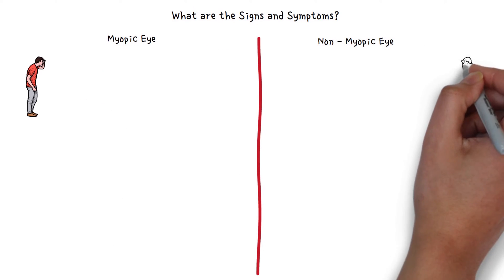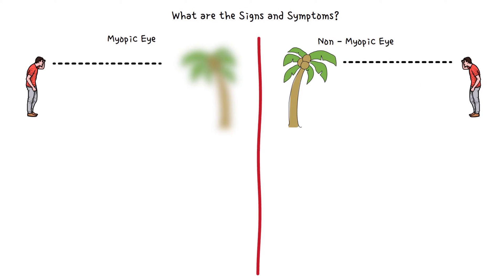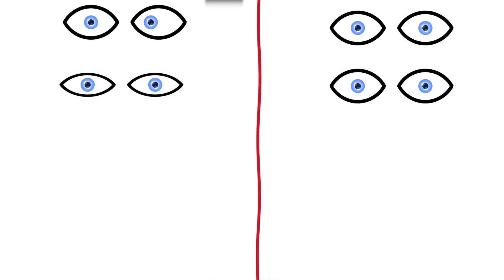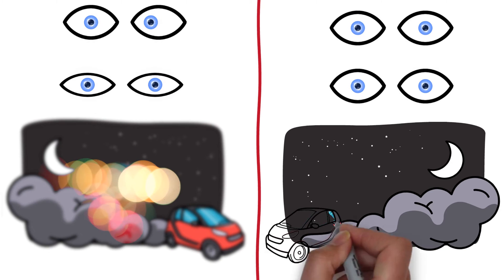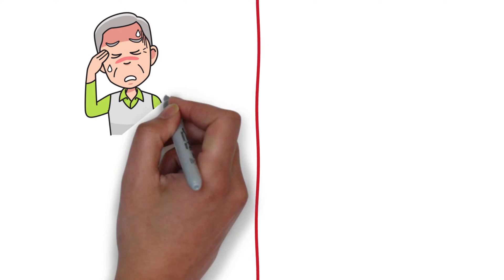People with myopia have blurry vision when looking at distant objects. They need to squint or partially close the eyelids to see clearly. Drivers also have difficulty seeing while driving a vehicle, especially at night. Others might experience headaches.